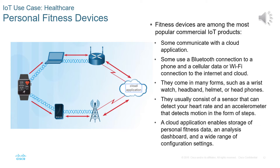Fitness devices are among the most popular commercial IoT products. Some of these devices communicate with a cloud application using a Bluetooth connection to a phone and a cellular or Wi-Fi connection to the internet. They come in many forms — such as a wrist watch, headband, helmet, or headphones — and usually consist of a sensor that detects heart rate and an accelerometer that detects motion. Some include advanced features such as GPS, sleep monitoring, and a cloud application that enables storage of personal fitness data, an analysis dashboard, and configuration settings.